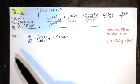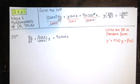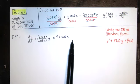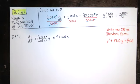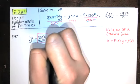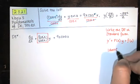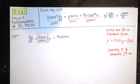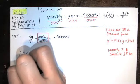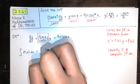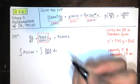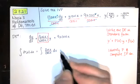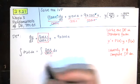After writing in standard form, our next goal is to find a function — the integrating factor — so that when we multiply the entire equation by it, the left-hand side becomes the derivative of a product: the derivative of y times the integrating factor. To do that, we identify p(x), the function multiplying y, and compute its antiderivative. Here p(x) = sin(x)/cos(x).